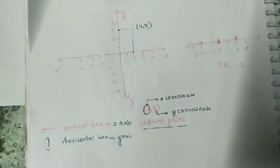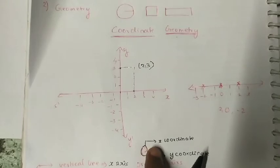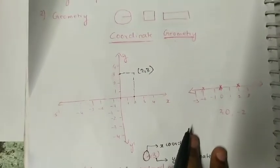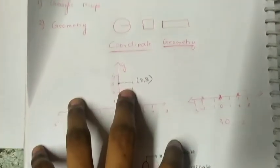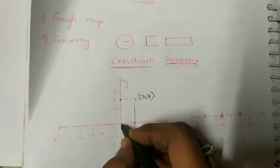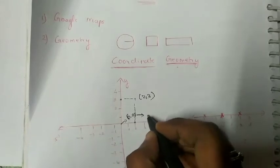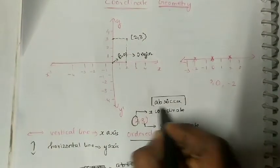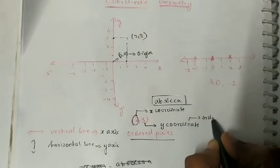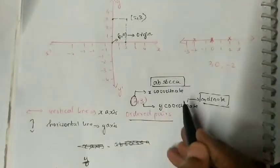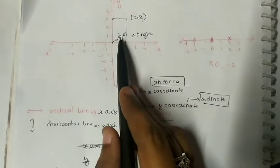In coordinate geometry, we are going to study about coordinates like x-coordinate and y-coordinate, which represent the ordered pairs. We are going to see how coordinate geometry helps in Google Maps — here we are going to mark paths. The intersection point (0, 0) is called the origin. Another name for the x-coordinate is abscissa, and another name for the y-coordinate is ordinate.